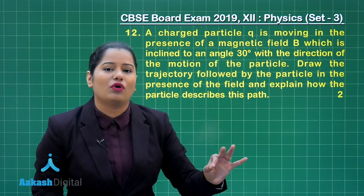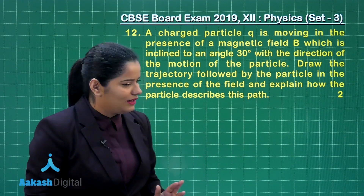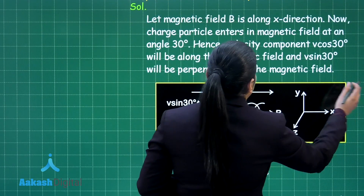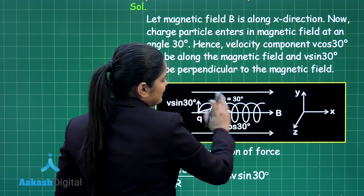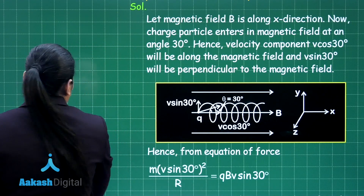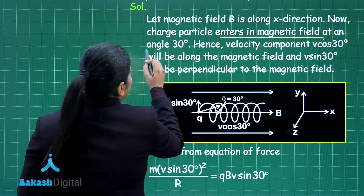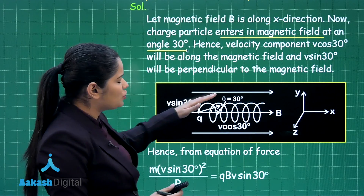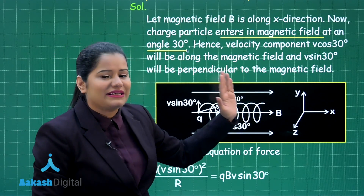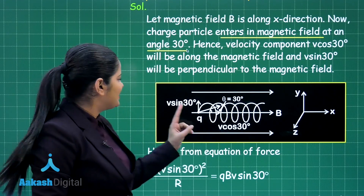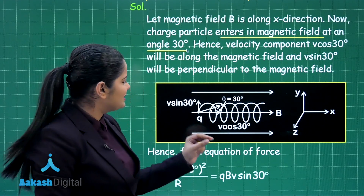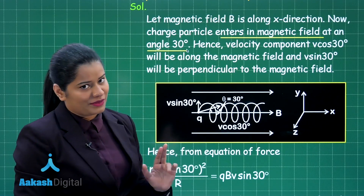First we need to draw the trajectory of the particle. Taking the magnetic field to be in the x direction, the charged particle enters the magnetic field at 30 degrees. There are two components of velocity: the component perpendicular to the magnetic field is V sin 30, and the component parallel to the magnetic field — along the x direction — is V cos 30.